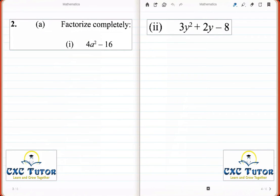Question 2a consists of two parts, and in both of these parts, you're supposed to factorize completely the following expressions. In part 1, the expression is 4a squared minus 16.